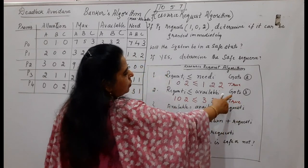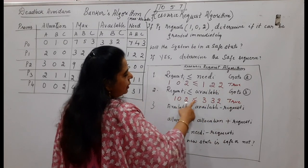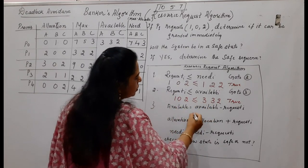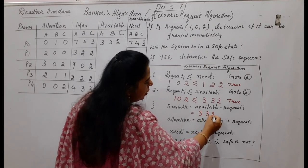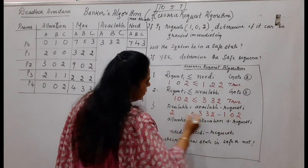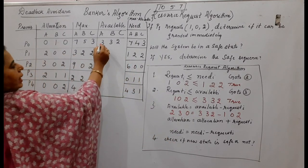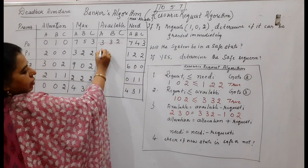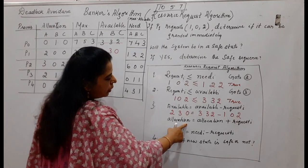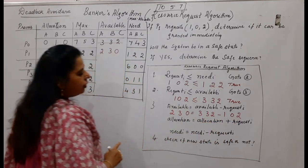Step 3: the system updates the available value. Since it is granting 1,0,2 to P1 from 3,3,2, the new available becomes 3−1=2, 3−0=3, 2−2=0. So available is updated to 2,3,0.